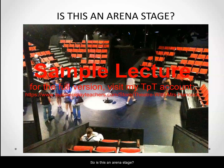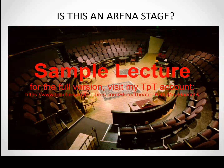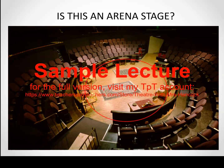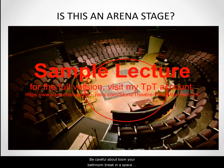So is this an arena stage? Here we see seating on all sides of this odd-shaped stage, but it is still an arena. Arena theaters are often called in the round, but as you can see they do not need to be round. Speaking of round spaces, is this an arena stage? Notice where the scenery and props have been placed and how low they are to facilitate the view of the audience. The actors enter through the same walkways used by the audience, so this is a very intimate space and it is indeed an arena. Be careful about timing your bathroom break in a space like this because you could just run into an actor on your way out.